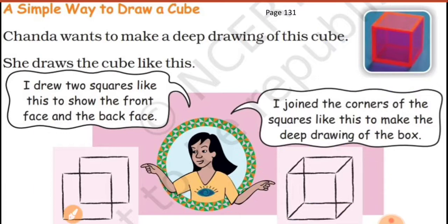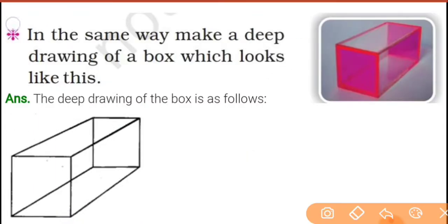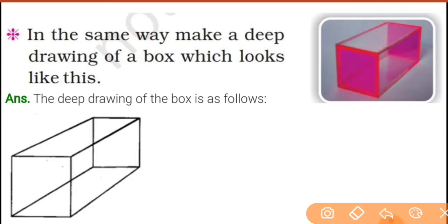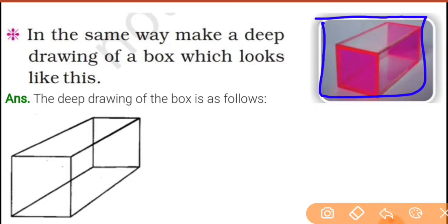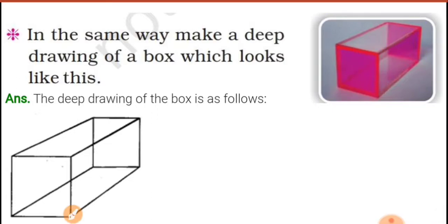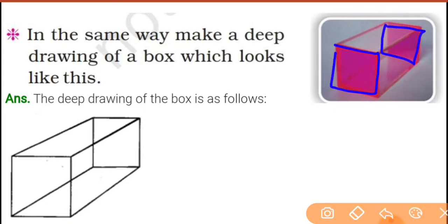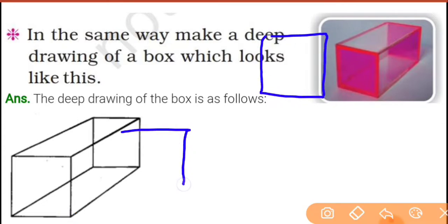Now you have a question: in the same way, make a deep drawing of a box which looks like this. This box is a cuboid, not a cube, because all the faces are not the same here. You can draw it — since the front face and the back face are square, draw two squares here.